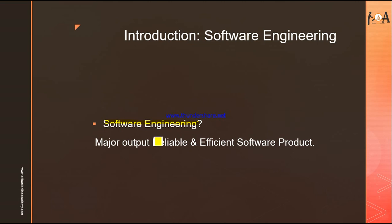Now let's explore software engineering consistently. The major output of software engineering is a reliable and efficient software product. If you have a reliable and efficient software product, you can say it came via a software engineering process. For example, suppose you ordered a software for your company and in the end you are getting the exact requirements — exactly what you wanted from that software — then you can say that it is the output of the software engineering process.